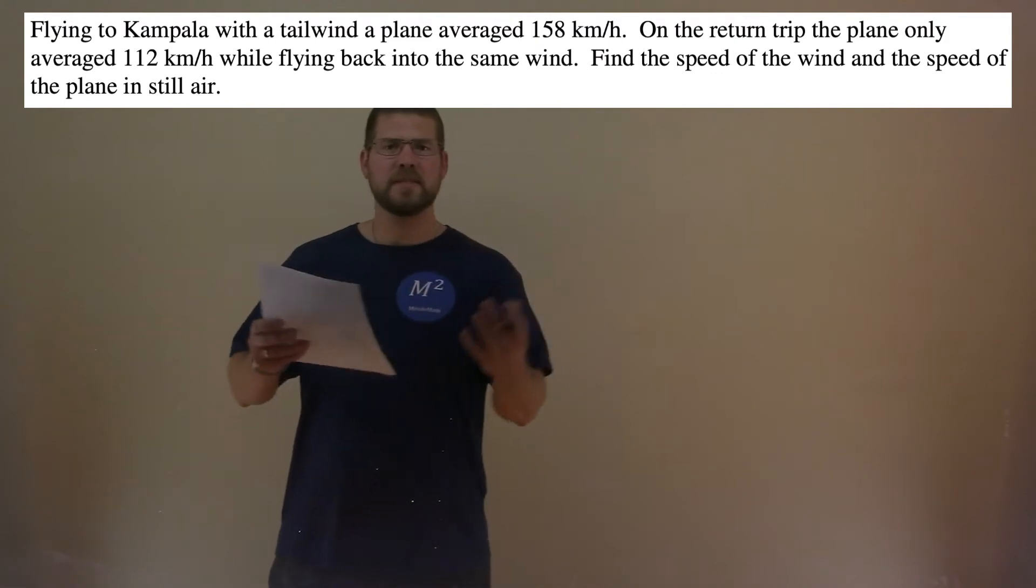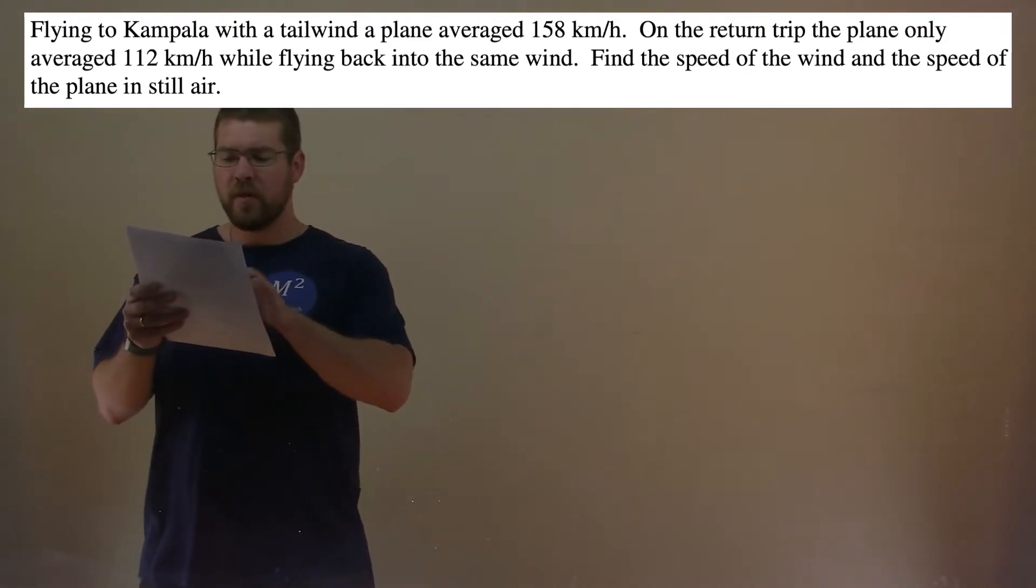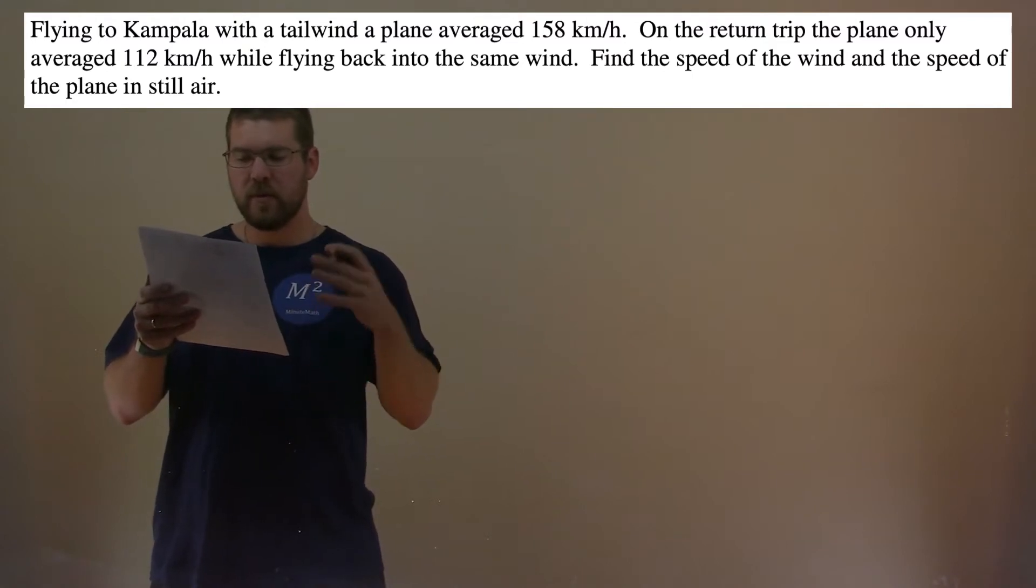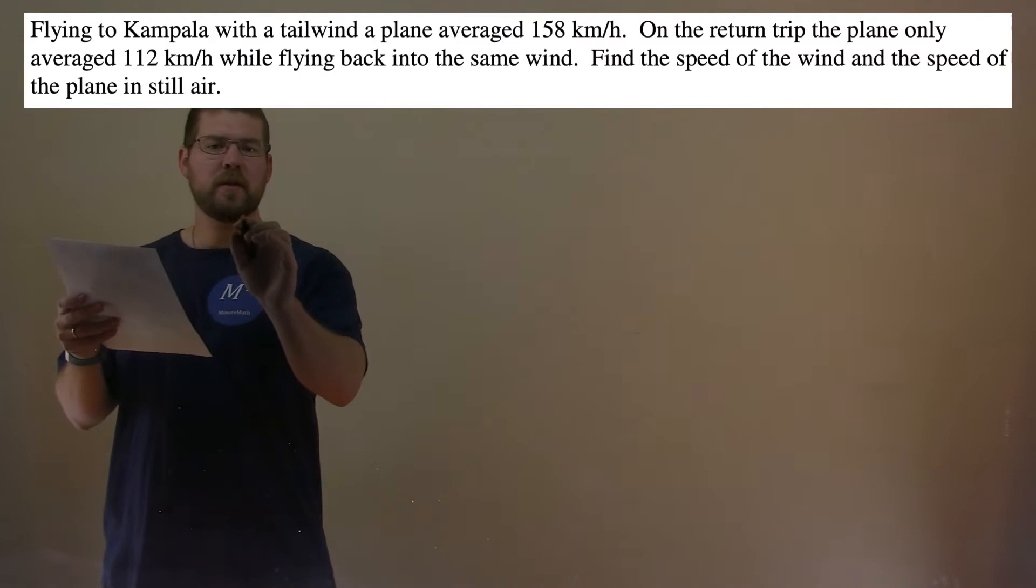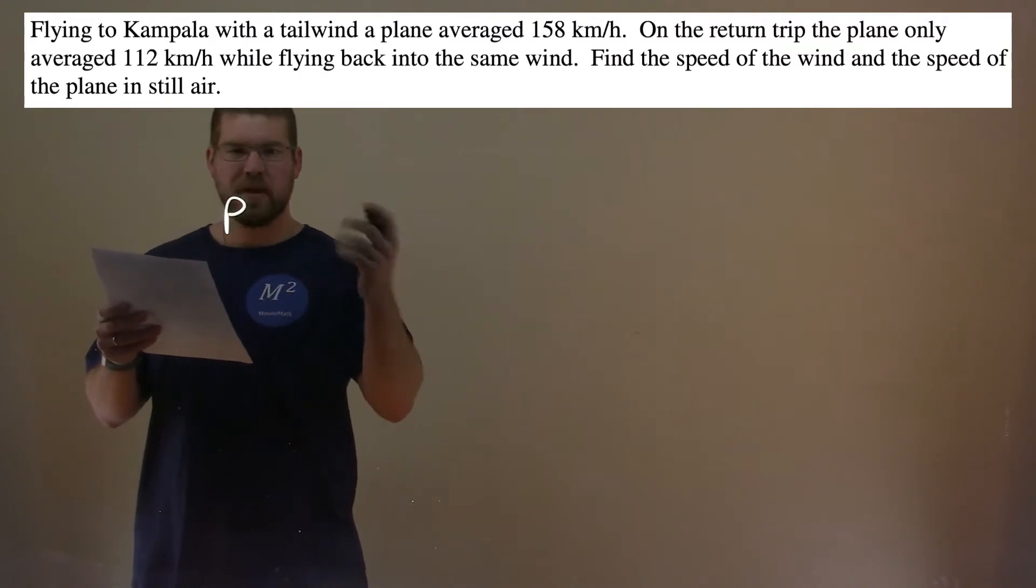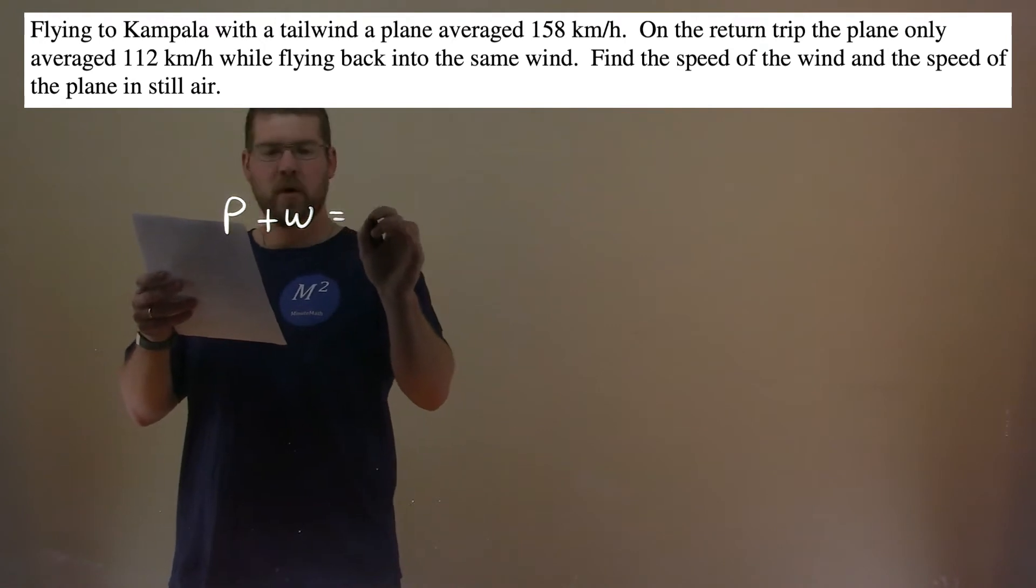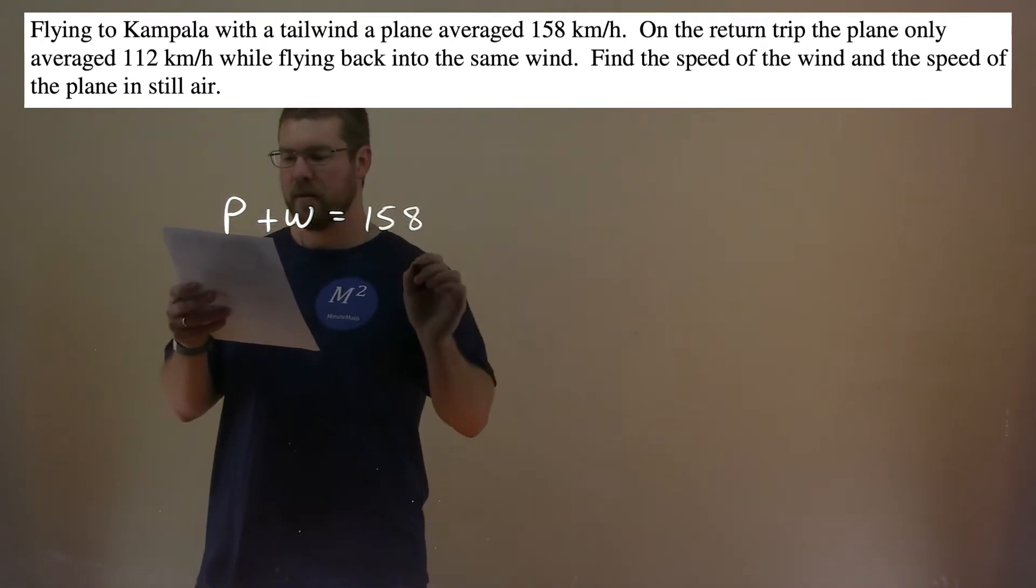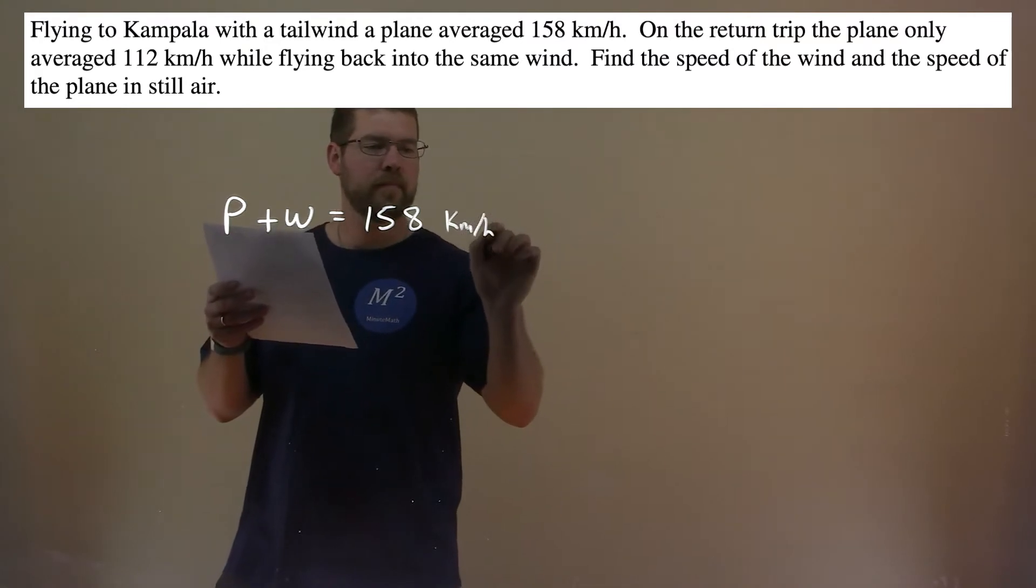Well, we want to find some Systems of Equations here. So first part here, they say with the tailwind, plane averaged 158 kilometers per hour. So the speed of the plane, we'll call it P, plus the tailwind, we'll call it W, is equal to 158 kilometers per hour.